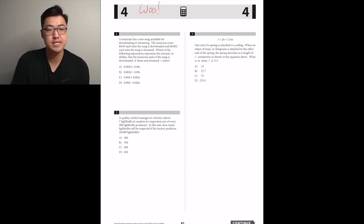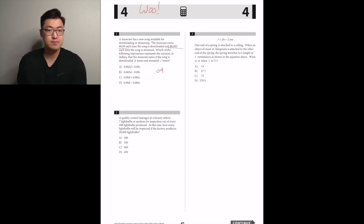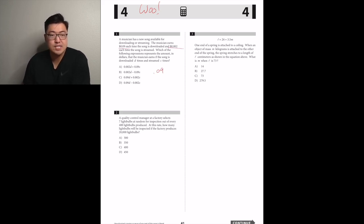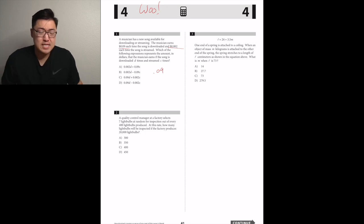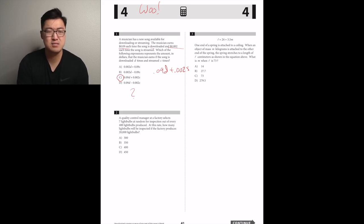A musician has a new song available for downloading or streaming. The musician earns $0.09 each time the song is downloaded and $0.002 each time it's streamed. Which expression represents the amount in dollars earned if the song is downloaded D times and streamed S times? That's 0.09D plus 0.002S, so C.